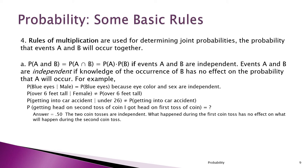For example, if we're tossing a fair coin and you know a head occurred on the first toss, what's the probability of a head on the second toss? It was 50% on the first toss, it's still 50% on the second toss, because each toss is independent of what happened before. With independent events, we just multiply the probabilities.